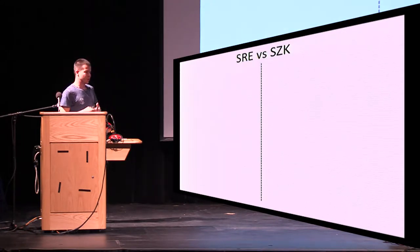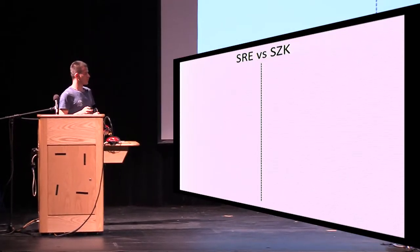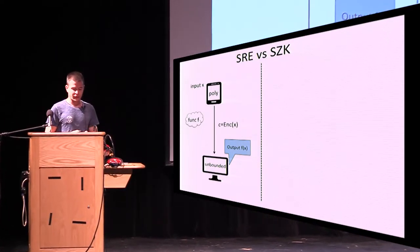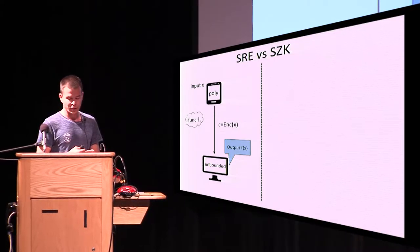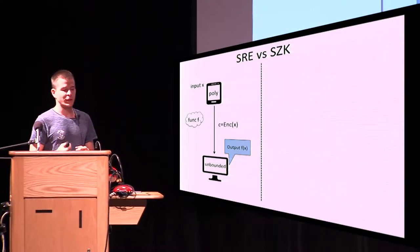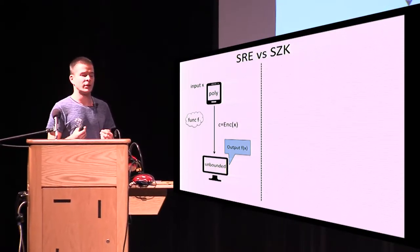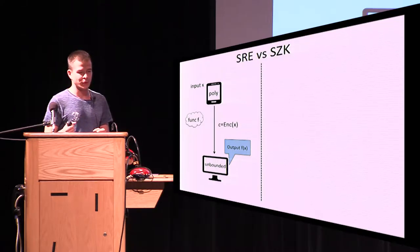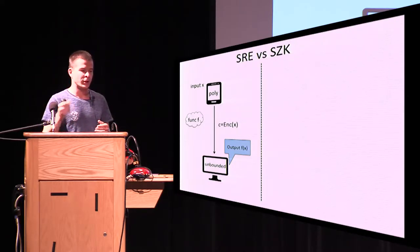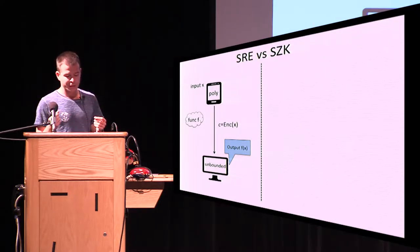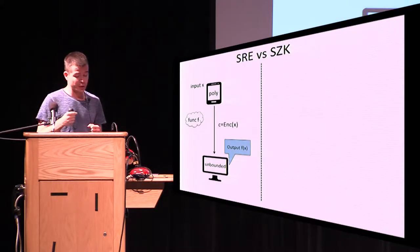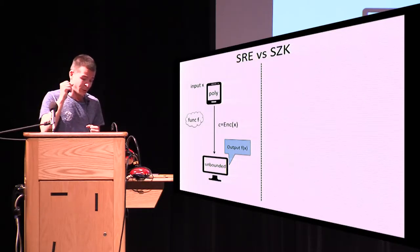Let's start by introducing the SRE setting. We have a computationally limited client — polynomially time bounded — who holds some input x and wants to compute some function f. Since he is computationally limited he cannot compute the function directly, so he wants to outsource his computation to a computationally unbounded server. He could just send his input to the server, but in our cryptographic world we would like privacy: we want to outsource computation to the server but let the server only compute the output of the function without learning anything about the input except the output on that particular input.